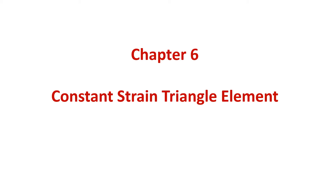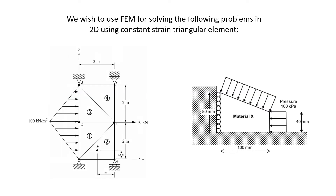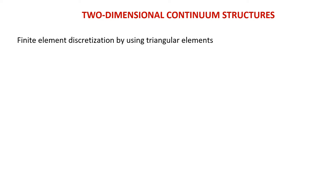Chapter 6: Constant Strain Triangle Elements, also known as CST. In this chapter, we wish to use finite element methods to solve problems by using 2D Constant Strain Triangular Elements. In this topic, the structure will be discretized by using triangular elements, which is a 2D Continuum Structure.